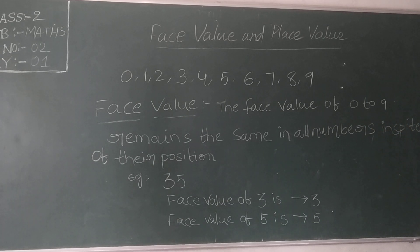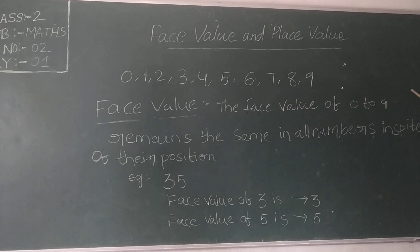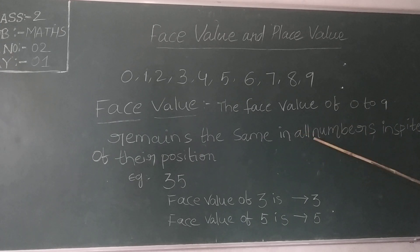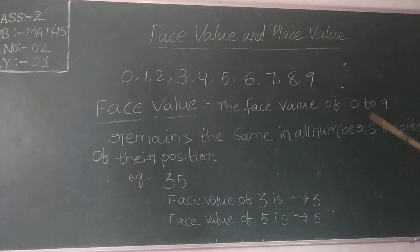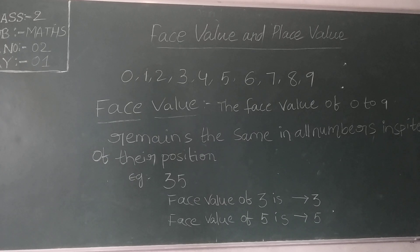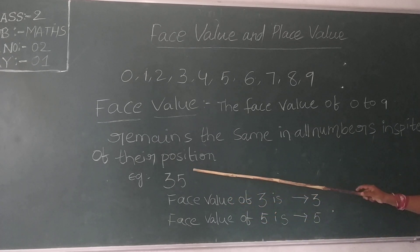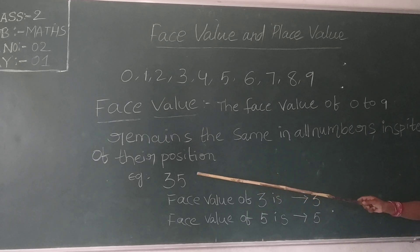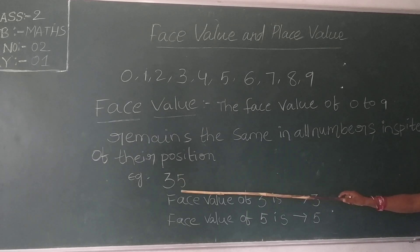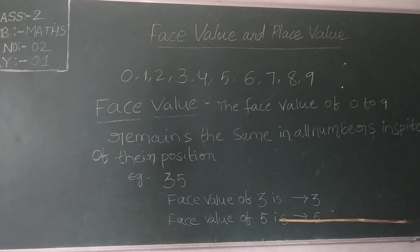What is face value? Face value means the face value of 0 to 9 remains the same in all numbers, in spite of their position. It means the face value of each digit in each number is the same as the digit itself. For example, what is the face value of 5? The face value of 5 is 5 only.